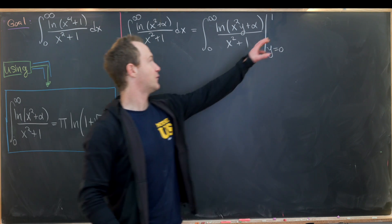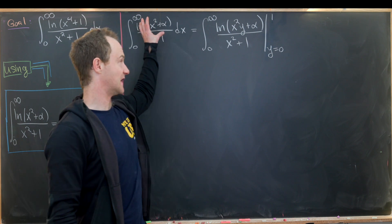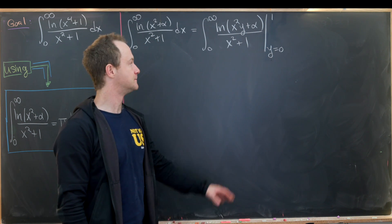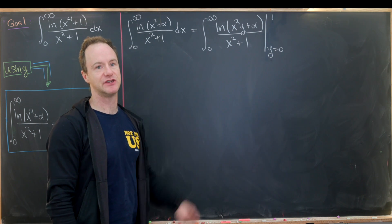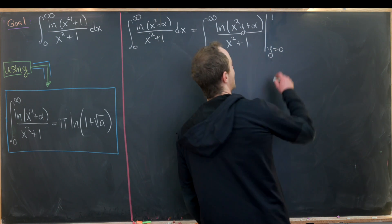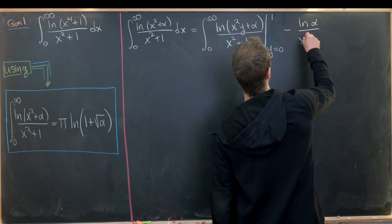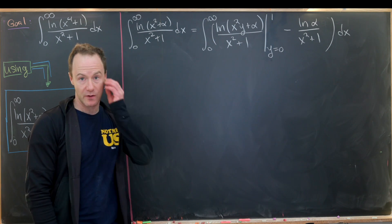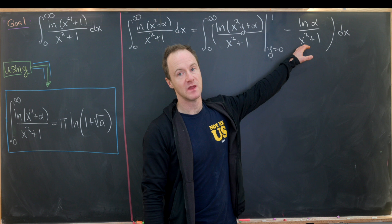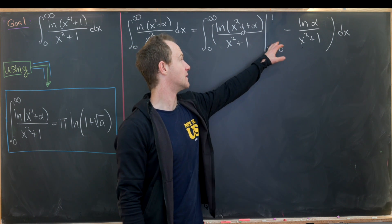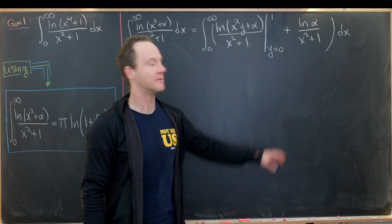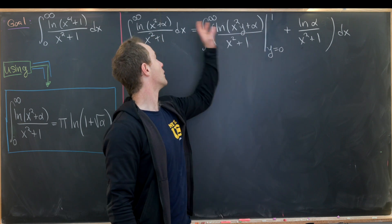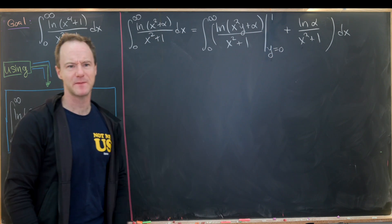That's not exactly right though. If we evaluate at one we get the integrand, but evaluating at zero picks up a natural log of α in the numerator. Since the lower bound is connected to a minus sign, we fix that by subtracting a copy of the natural log of α over (x² + 1) within the integral. So we added and subtracted this term — the subtraction comes from the lower bound of our zeroth integral, and evaluating at one gives us back what we have.